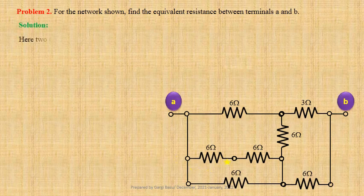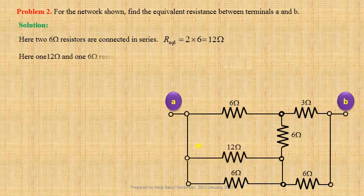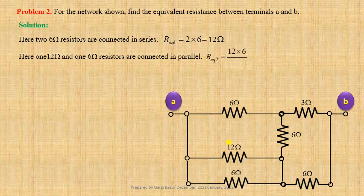For the next network, two 6 ohm resistors are connected in series; their equivalent resistance Req1 equals 2 times 6 equals 12 ohm. One 12 ohm and one 6 ohm resistors are connected in parallel; Req2 equals 12 times 6 divided by 12 plus 6 equals 4 ohm.